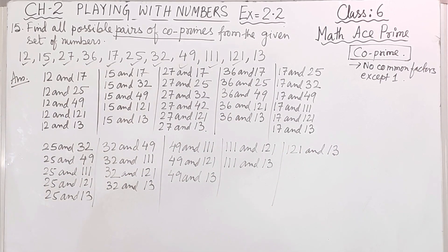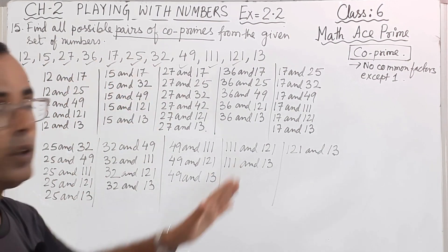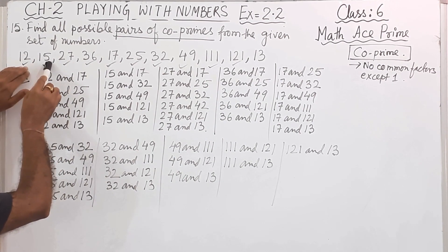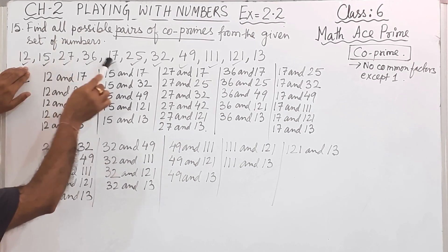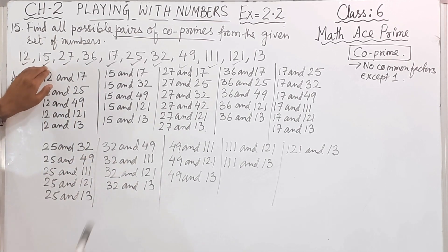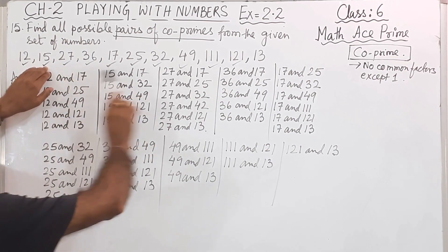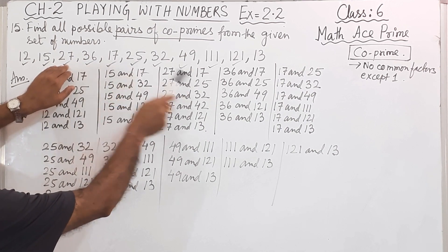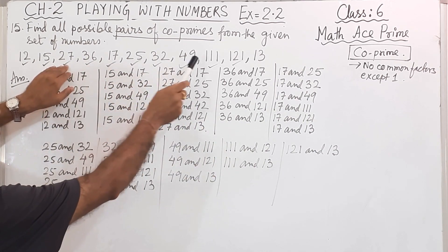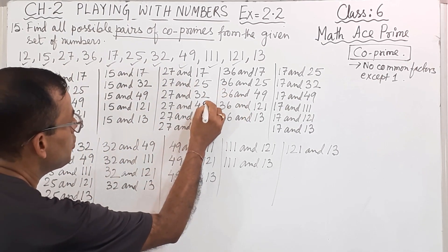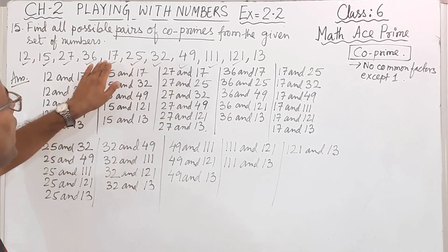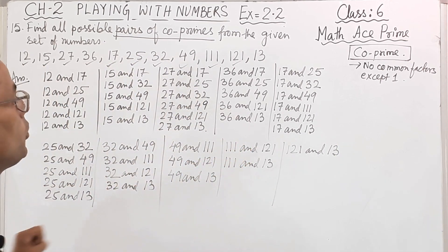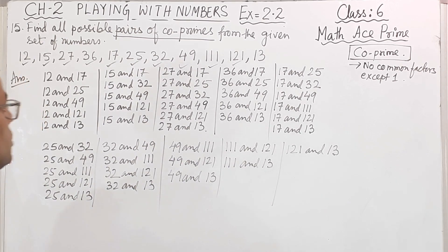So students, I hope you have understood question number 15. When solving, you must follow this order — take 12, check it with 15, 27, 36, 17, and so on. Then take 15, then 27, and go through each pair in order. If you don't do it in an orderly way, you may make mistakes. I have written 42 earlier — it should be 49. So 27 and 49. Finish each number before moving to the next.